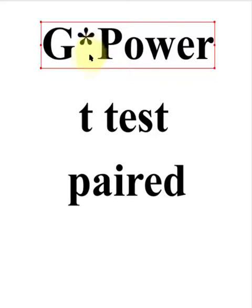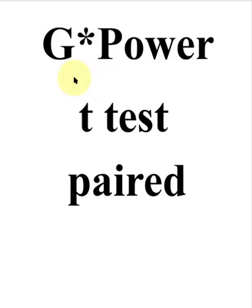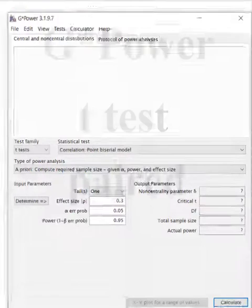We're going to use G-Power to calculate the minimum sample size needed to run a paired t-test. Remember, a paired t-test has only one group but two measurements, like a pre-test and a post-test. Was there a significant change between the pre-test and the post-test? Heads up, paired t-tests don't need that many people. Let's pull up G-Power.